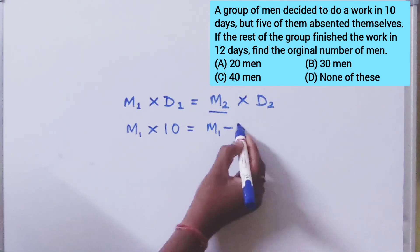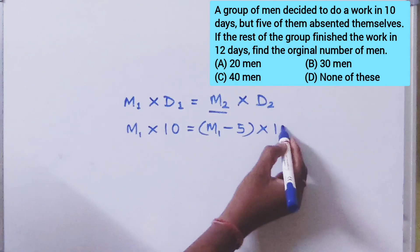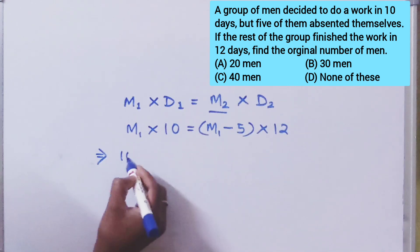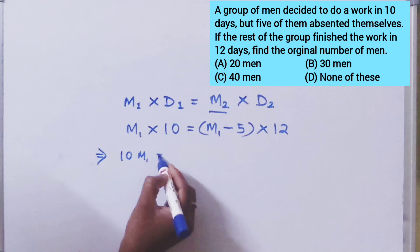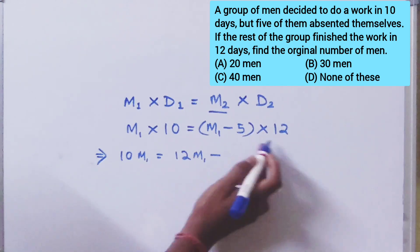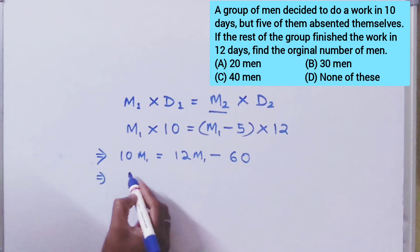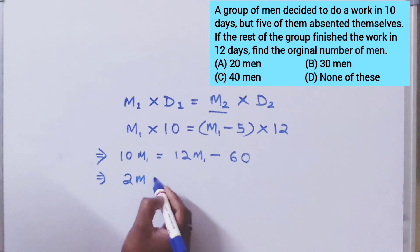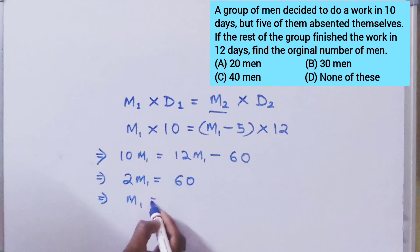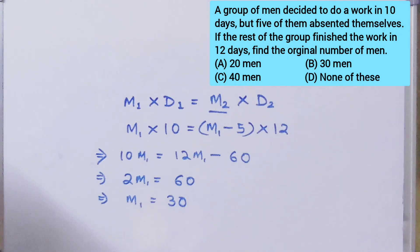M1 minus 5 into D2. So, M1 is equal to...